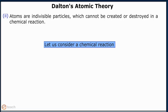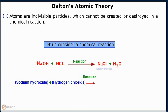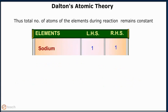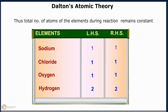Let us consider a chemical reaction. Sodium hydroxide with HCl gives sodium chloride and water. Thus, total number of atoms of the elements during reaction remains constant.